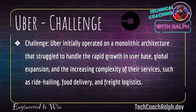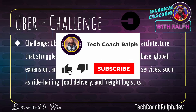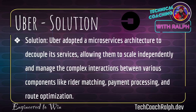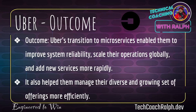Uber initially operated as a monolithic architecture that struggled to handle rapid growth in their user base, global expansion, and increasing complexity of services such as ride-hailing, food delivery, and freight logistics. Uber adopted a microservice architecture to decouple its services, allowing them to scale independently and manage the complex interactions between various components like rider matching, payment processing, and route optimization. Uber's transition to microservices enabled them to improve system reliability, scale their operations globally, and add new services more rapidly, also helping them manage their diverse and growing set of offerings more efficiently.